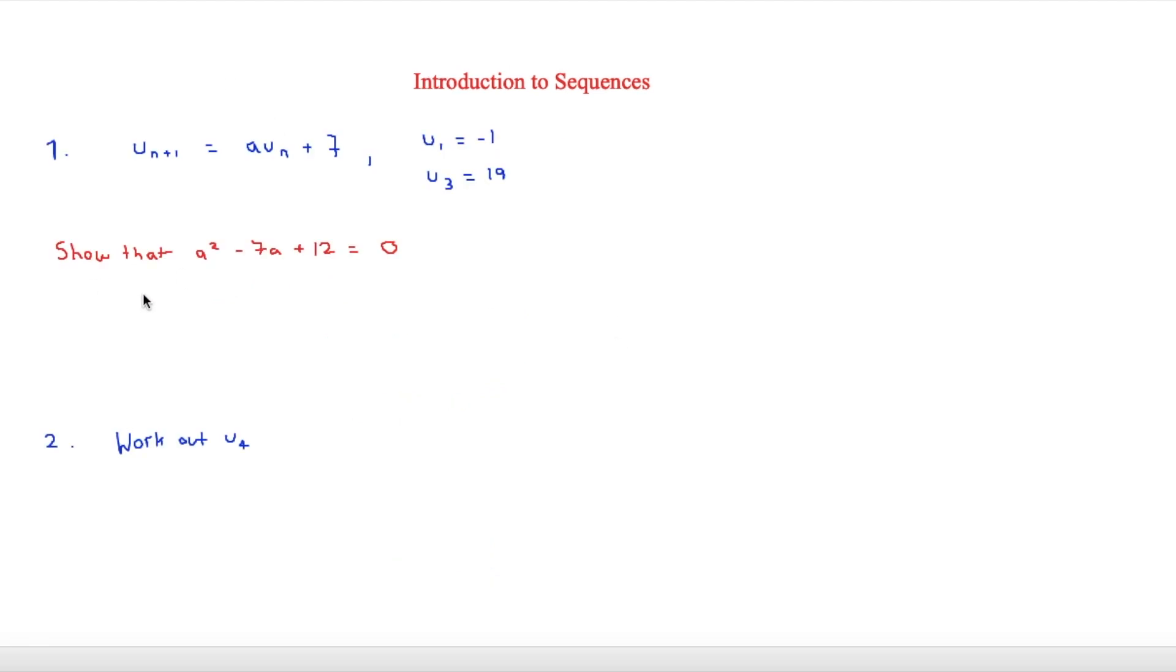So the final question we'll be answering today is a slightly harder one. And it says that un plus 1 is equal to a un plus 7. And we know that u1, so the first term, is equal to minus 1. And then the third term is equal to 19. And we have to show that a squared minus 7a plus 12 is equal to 0. So it looks quite a weird thing and it may be hard to know where to start.